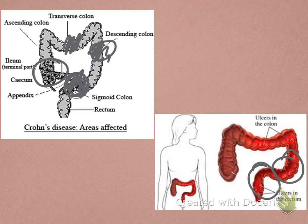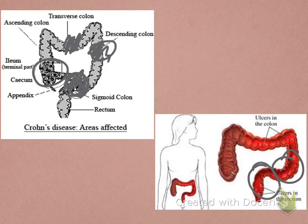When we think about complications, nutritional complications can be a major issue for these patients, and it's going to be worse when the disease is impacting the small intestine. The small intestine is where we begin to absorb nutrients from food, so problems there will lead to problems with absorption, resulting in malnutrition.